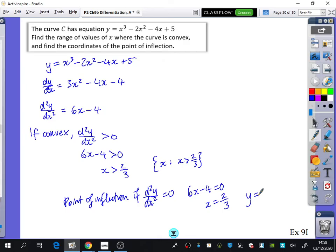And then you plug it in and you find out what y is. So (2/3)³ - 2(2/3)² - 4(2/3) + 5. And you get 47/27. So the coordinate is (2/3, 47/27).